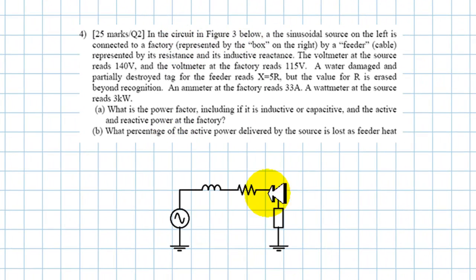In the circuit of figure 3 below, a sinusoidal source on the left is connected to a factory represented by this box on the right by a feeder, which is a cable represented by its resistance and its inductive reactance. The voltage at the source reads 140V. The voltmeter at the factory reads 115V. These are RMS, of course. A water-damaged and partially destroyed tag for the feeder reads X is 5R, but the value of R is erased beyond recognition. That is, we do not know the value of this resistance, but we know that this reactance is 5 times that value, whatever that value is.